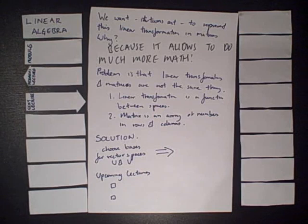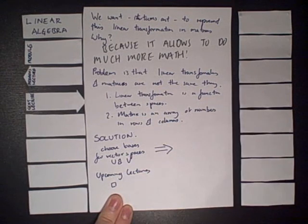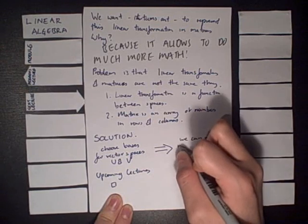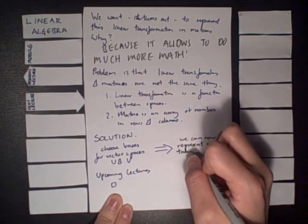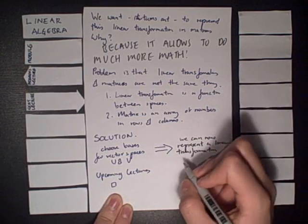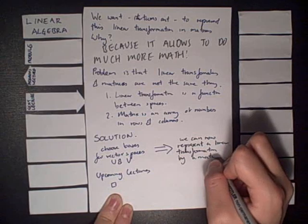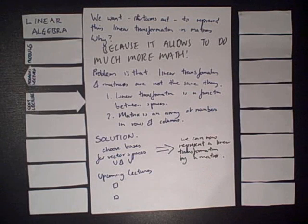This problem is easily solved if we do one thing. If we choose bases for vector spaces U and V, then we can represent a linear transformation by a matrix. If this isn't clear to you why this is the case, don't worry, we'll deal with that in upcoming lectures.